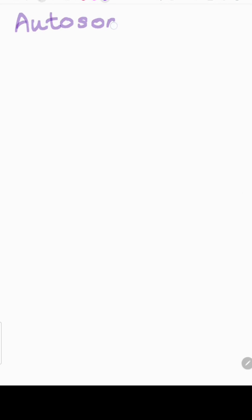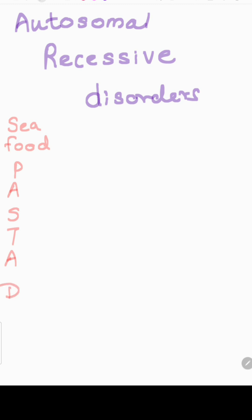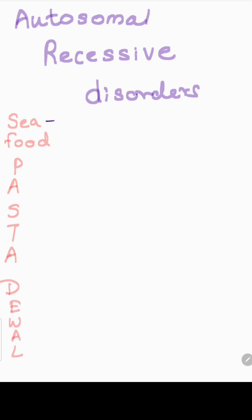I told you the mnemonic I used to remember autosomal recessive diseases, but this is an alternative mnemonic: 'seafood pasta devil'. C means cystic fibrosis — S and F are near, so C is okay for cystic fibrosis, F for Friedreich's ataxia.